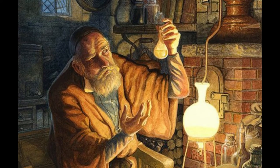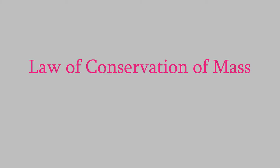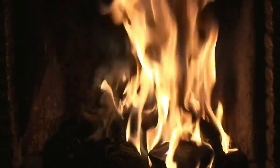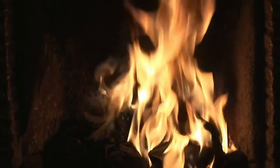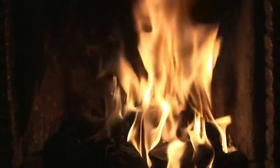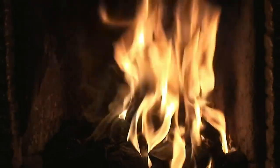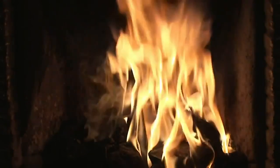Phlogiston was another one of those theories left over from the days of alchemists, and it wasn't disproved until the 1770s. The person who finally crushed phlogiston theory was our friend Antoine Lavoisier, who we've talked about several times before. You might remember that Lavoisier developed the law of conservation of mass, which says that matter can't be created or destroyed. Lavoisier performed several really careful experiments and found that the mass of the reactants in a combustion reaction is the same as the mass of the products — there was no missing mass that could have been due to the phlogiston getting away.